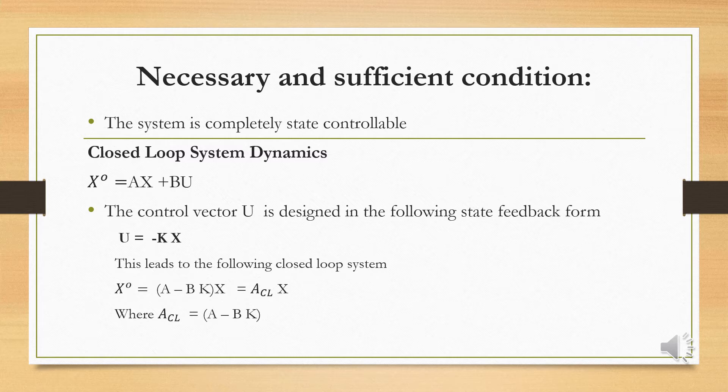We call the roots or diagonal elements of the system matrix the poles. These poles are eigenvalues of the matrix, given by the condition: determinant of lambda_i minus A equals zero. Solving for lambda gives the eigenvalues. If the matrix changes to A minus BK, the pole locations change accordingly.